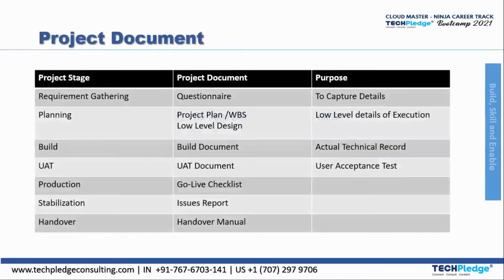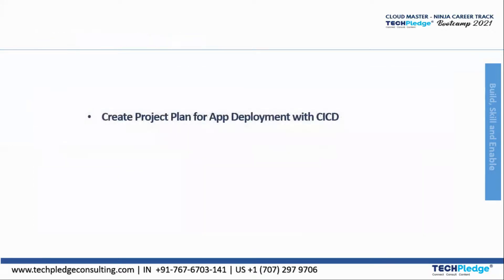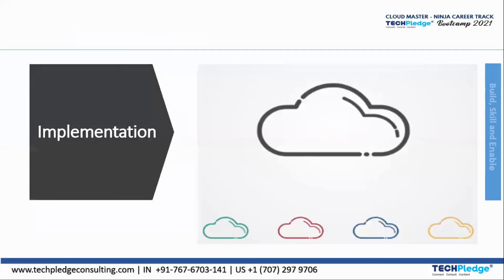So these are the different project stages and we have seen different project documents and their purposes. Next is to create a project plan for app deployment with CI/CD. That is the last and final thing we are going to look at, so let's take a break and move on to our live demo and live implementation of our project.